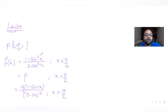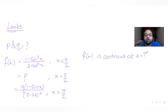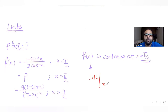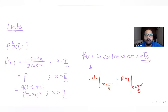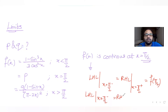This function has various different definitions for different values of x, and we are told that f(x) is continuous at x = π/2. When f(x) is continuous at x = π/2, the left-hand limit (x → π/2⁻) equals the right-hand limit (x → π/2⁺), and both equal the function value f(π/2) = p.